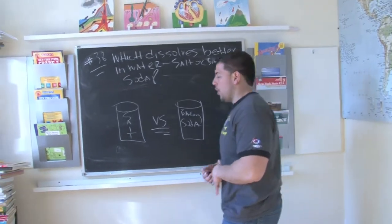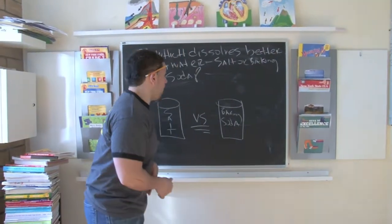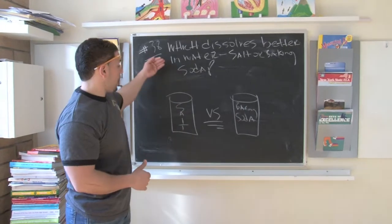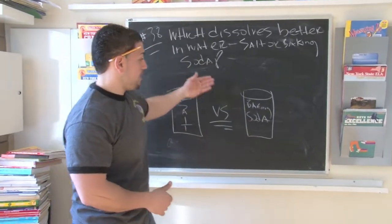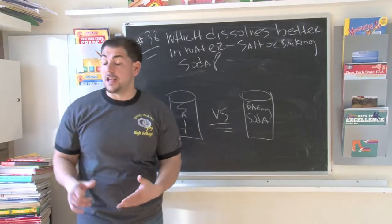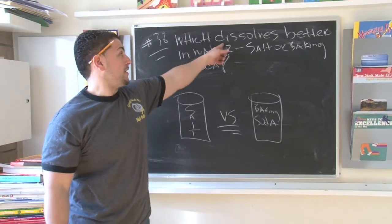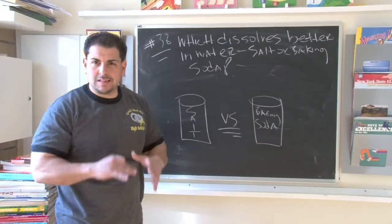All we're going to try to see is which dissolves better. So what we're going to do is we're going to add salt to water, and then we're going to add baking soda to water. And then we're going to record our results and see which dissolves. Now by dissolve means like breaks down, disappears.